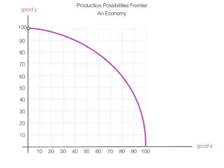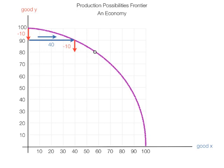Notice the curve is bowed out. Now, imagine the economy producing where that gray dot is, and it gives up 10 units of Y to produce 40 units of X. The economy got a big bang — it didn't give up a lot of Y and got a lot of X. Now, if the economy shifts again and gives up 10 more, it gets less than 40X but still had to give up 10 units of Y. We call this the law of increasing relative cost. Each time the economy gives up 10, it gets less and less X.